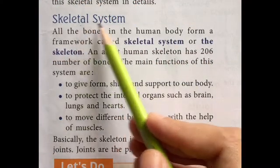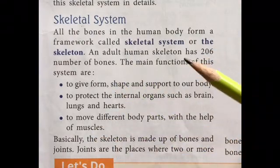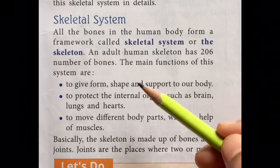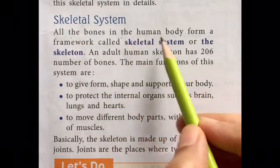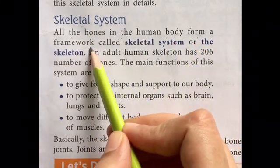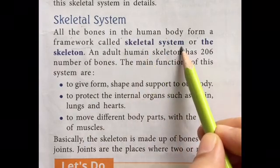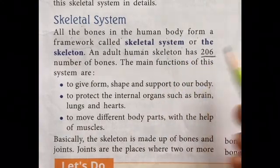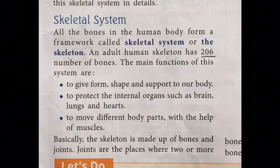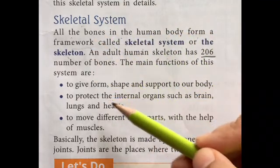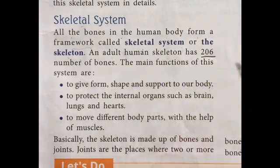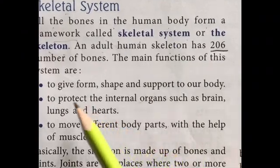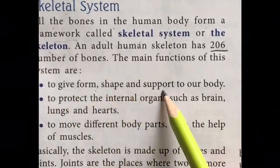So what is the skeletal system? There are so many bones in our body which make the framework of our human body. All the bones in the human body form a framework structure called the skeletal system or the skeleton. The adult human body has 206 bones. This framework of bones inside our body is called the skeleton or skeletal system. This is important to give form, shape, or support to our body.